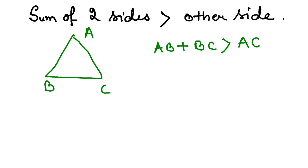Similarly, if you take AB and AC, this should be greater than the third side, that is BC. And if you take BC plus AC, it should be greater than the third side, that is AB.